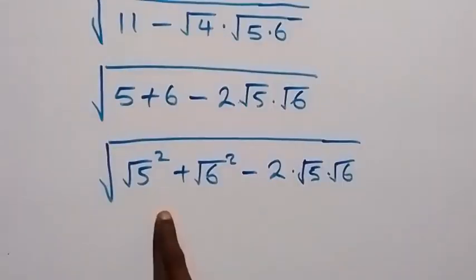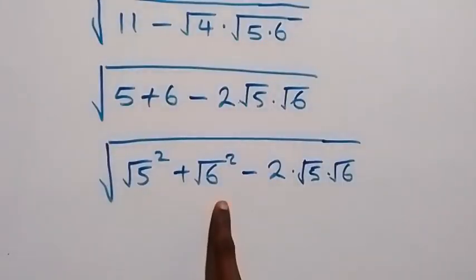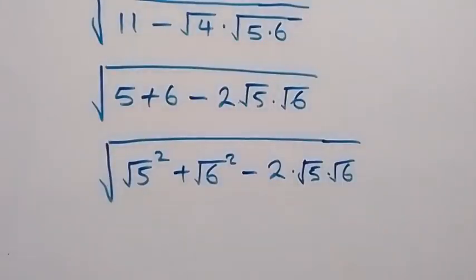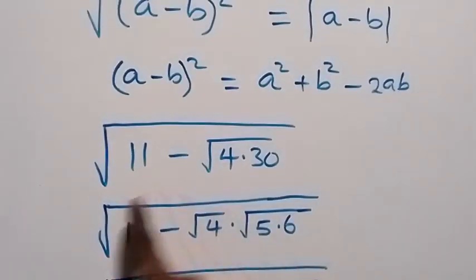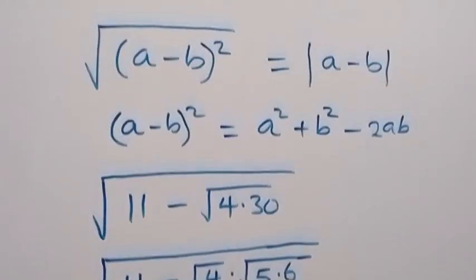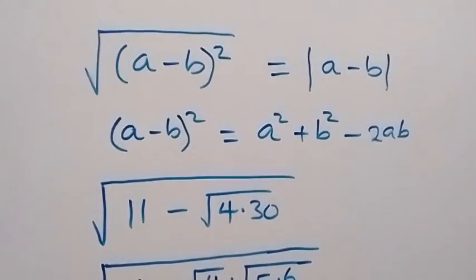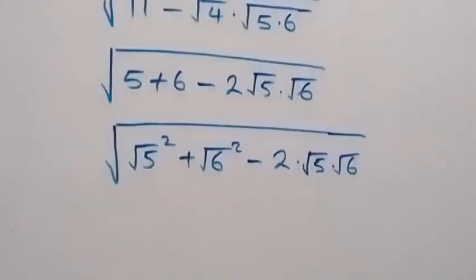So we have a equals √5 and b equals √6, and therefore we can write it like what we have here, which is (a minus b) squared. So now this will become the square root of (√5 minus √6) squared.